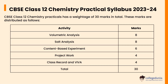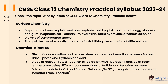Let's check the CBSC Class 12 Chemistry Practicals syllabus 2023 to 2024. The practicals carry a weightage of 30 marks in total. These marks are distributed as follows: volumetric analysis — 8 marks, salt analysis — 8 marks, content-based experiment — 6 marks, and project work, class record, and viva — 4 marks.